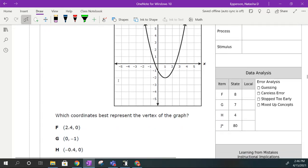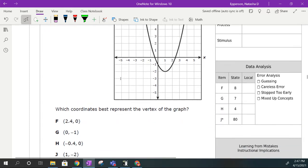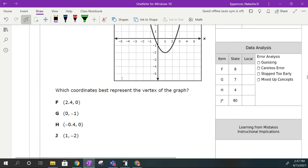Number 50, the quadratic graph shown on the graph. We want to know what coordinate best represents the vertex. So the vertex is the minimum point here, and that's going to be 1, negative 2, which is our answer choice. That easy.